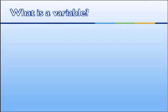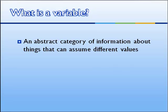What's a variable? If you've taken an algebra course, you might be thinking it's a letter and it can take on any numeric value. Well, that's true, but it's a bit more broad than that. A variable is an abstract category of information about things that can assume different values.